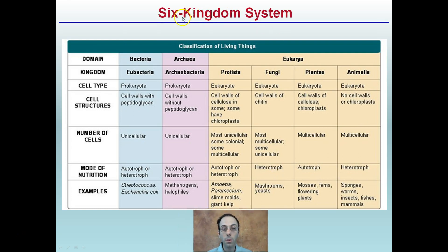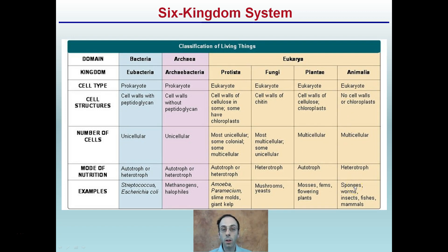This example of our six-kingdom system provides the domain, the kingdom, the cell type, the structures, the number of cells, the mode of nutrition, and examples of them — different ways we can classify them and see how each is unique. Remember, our prokaryotes versus our eukaryotes: eukaryotes have membrane-bound organelles, prokaryotes do not. The domain of eukarya is very broad, encompassing protists, fungi, plants, and animals. Bacteria and archaea are separate domains. Bacteria have peptidoglycan walls, as we discussed with the gram stain. Both bacteria and archaea are unicellular, while most eukaryotes are multicellular, though a couple of fungi may be unicellular. Overall, this gives a nice comparison of what makes each kingdom unique and different.